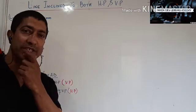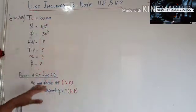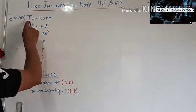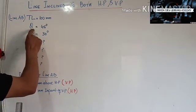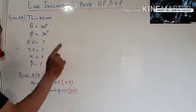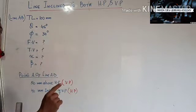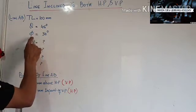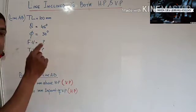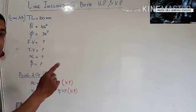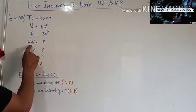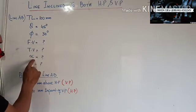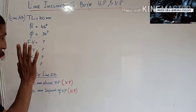It is a very important condition and these are the assumed parameters. The true length of line AB is 100 mm. Theta, the angle made by the line with the horizontal plane, is 45 degrees. Phi, the angle made by line AB with the VP, is 30 degrees. We have to find out the front view, top view, alpha, and beta.